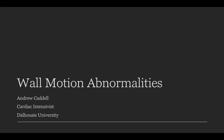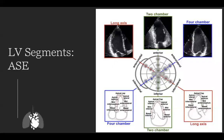Today's topic is regional wall motion abnormalities. Wall motion abnormalities are typically described by which segments they occur in. For this, the American Society of Echo, or ASE, has divided the left ventricle into 17 segments: 6 at the basal level, 6 at the mid, 4 at the apical level, and then an apical cap. There are other ways of dividing the LV depending on your background — whether you're from critical care or the emergency department — but they all effectively describe the same thing.